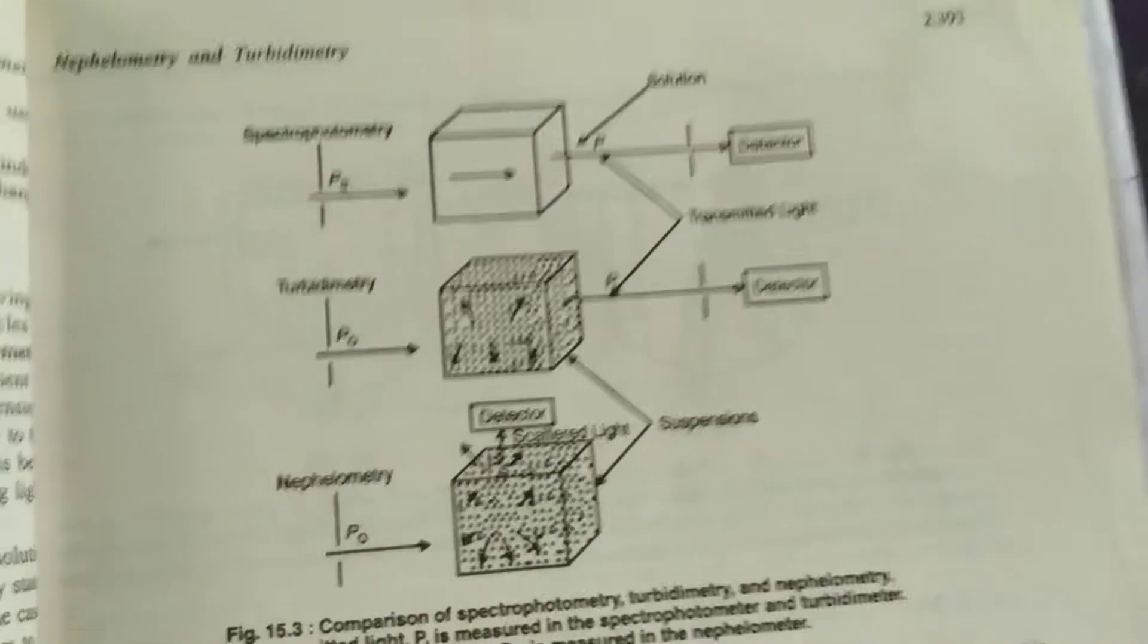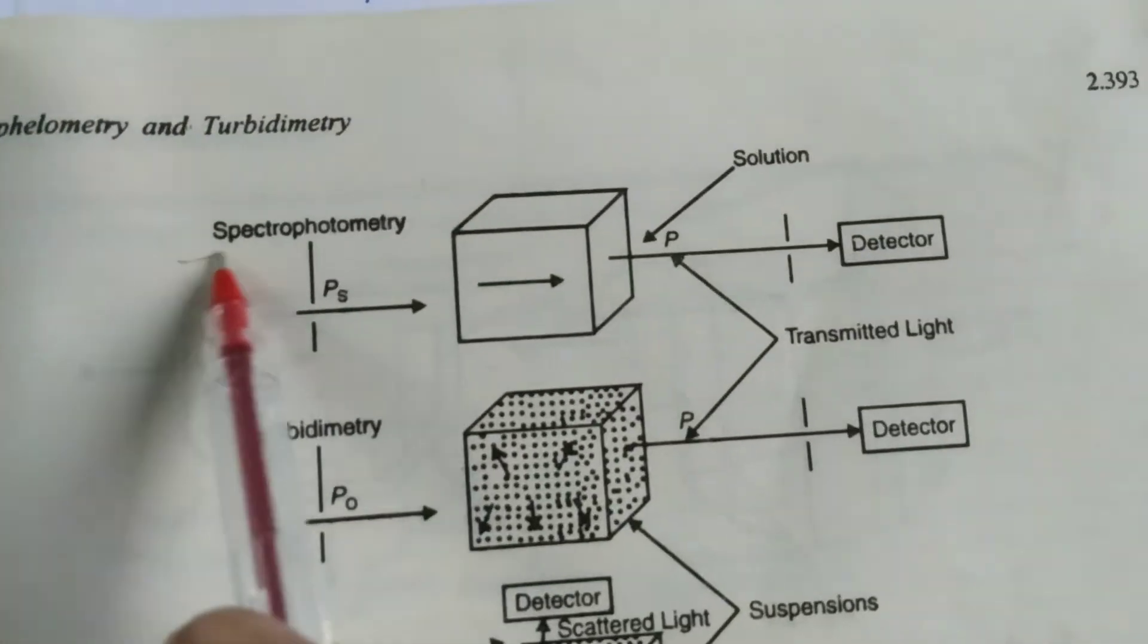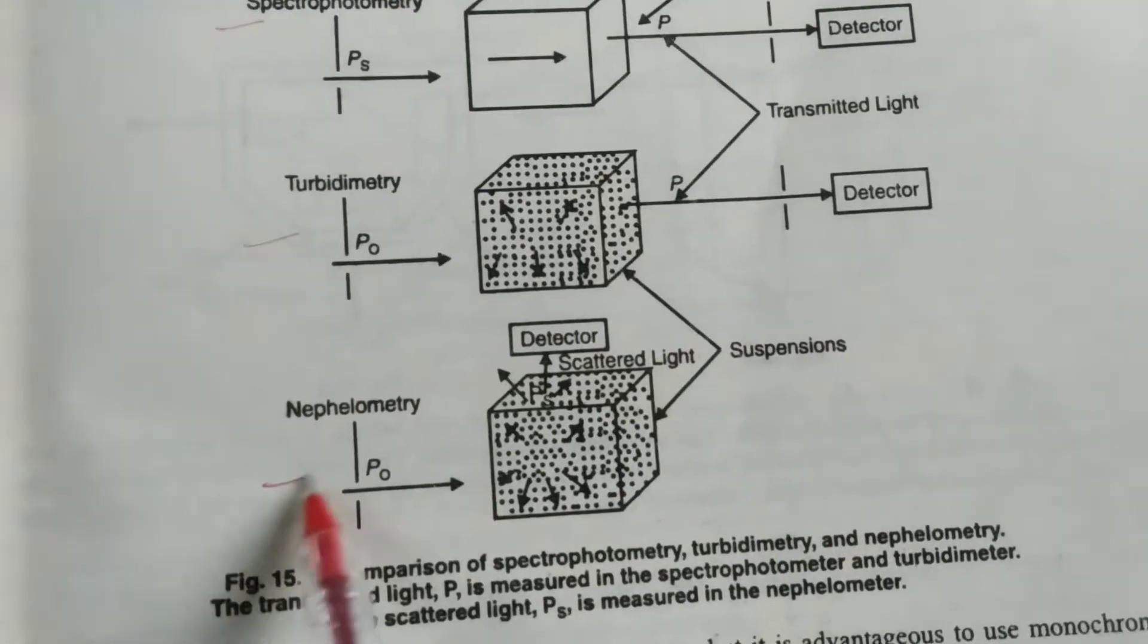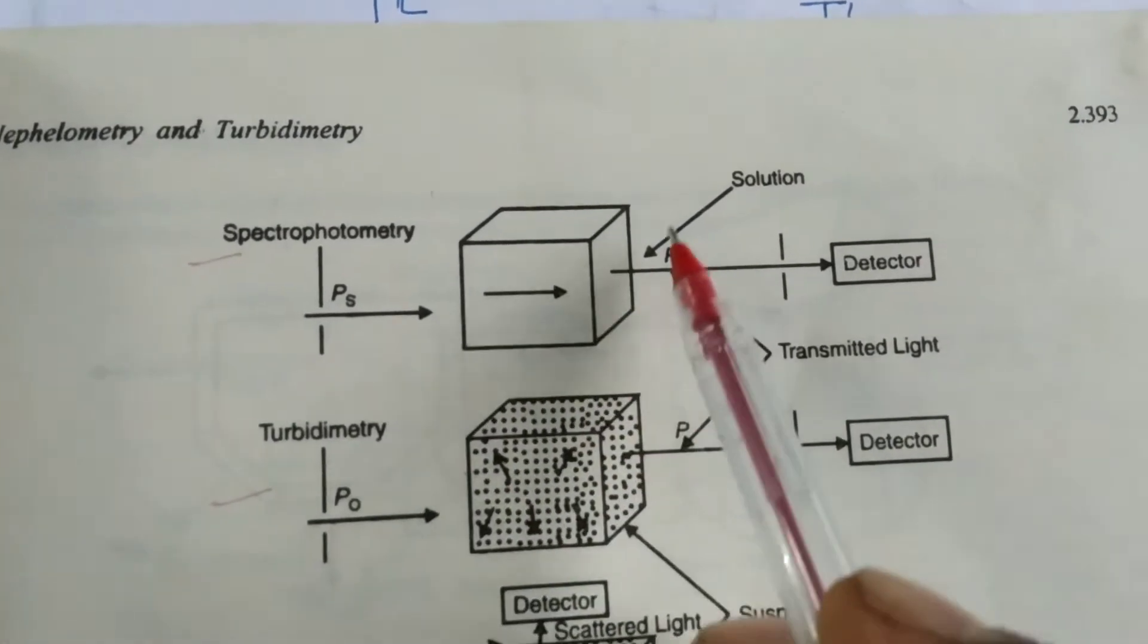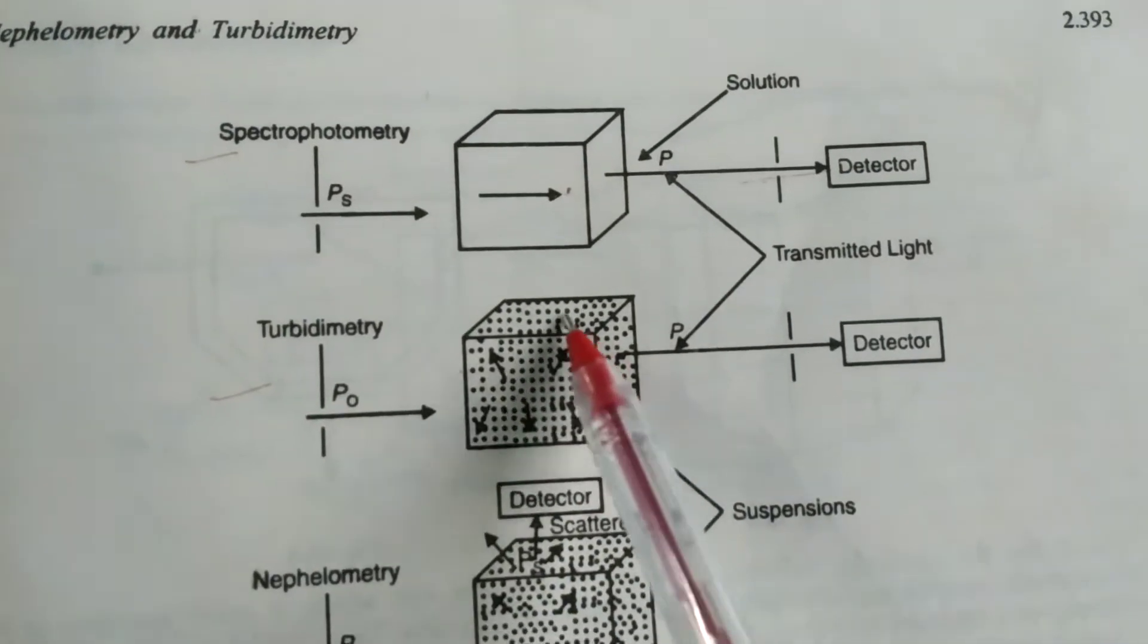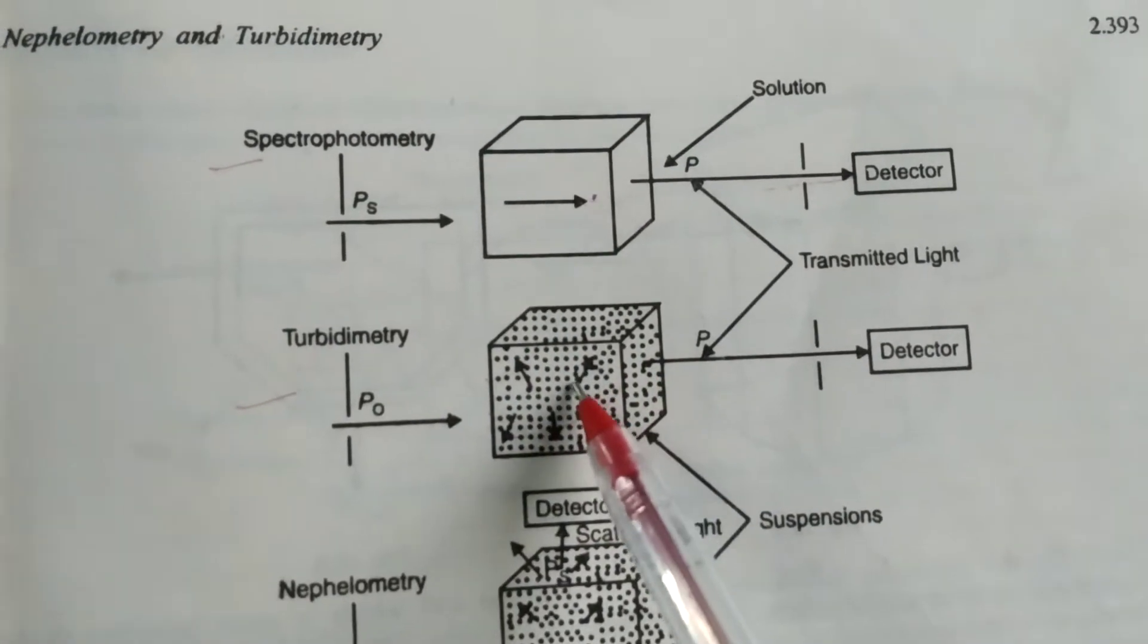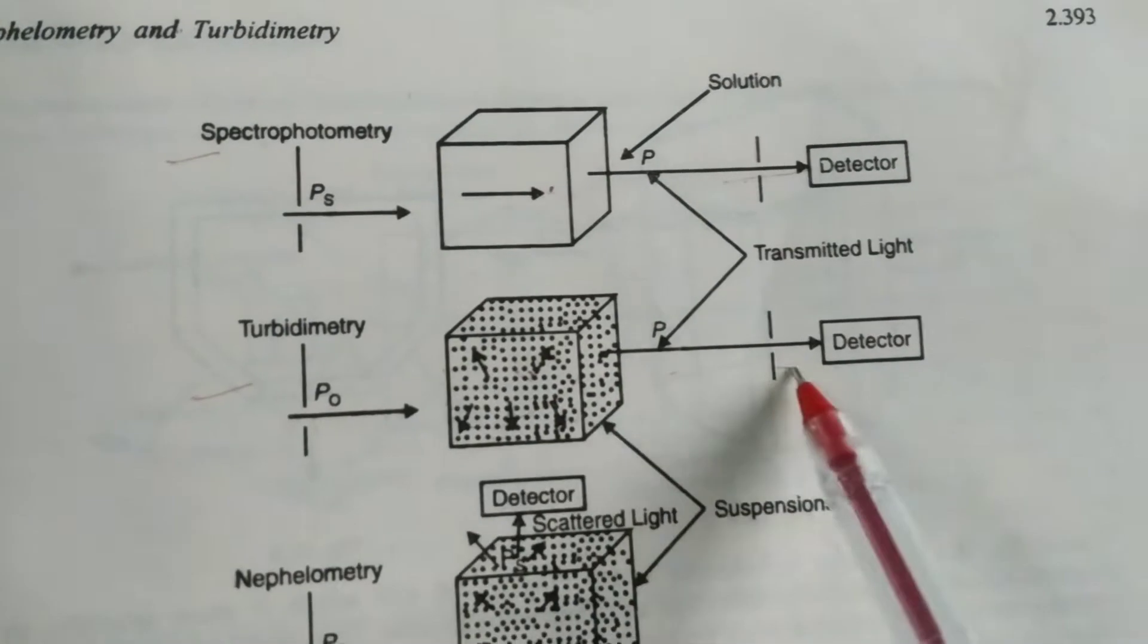There are three methods: spectrophotometry, turbidimetry, and nephelometry. In spectrophotometry, there is a clear solution and we measure the transmitted light. In turbidimetry, we also measure the transmitted light.